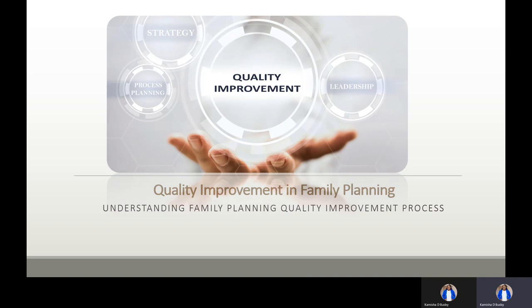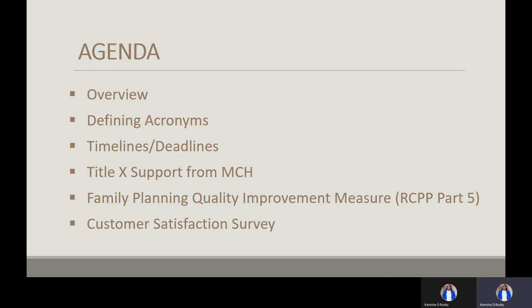We'll discuss more about understanding the family planning quality improvement process in this presentation. The agenda will provide an overview of what we'll be discussing today: defining acronyms commonly used in Title 10 reporting, timelines and deadlines, Title 10 support from MCH, family planning quality improvement measures from your participation plan, and the customer satisfaction survey.